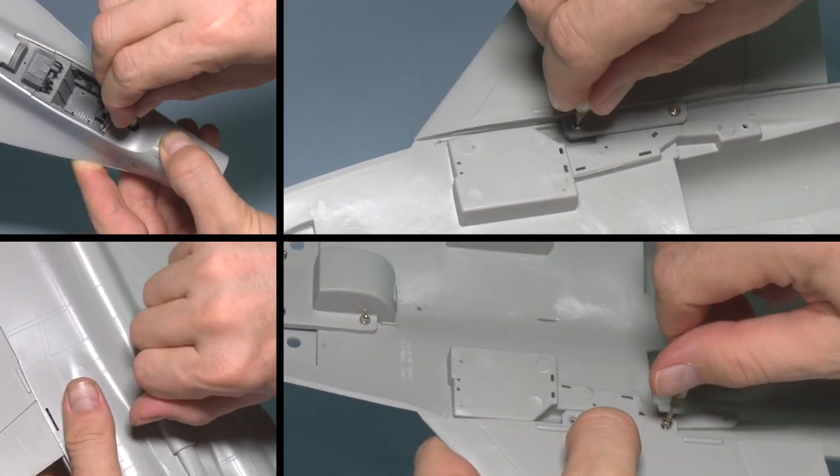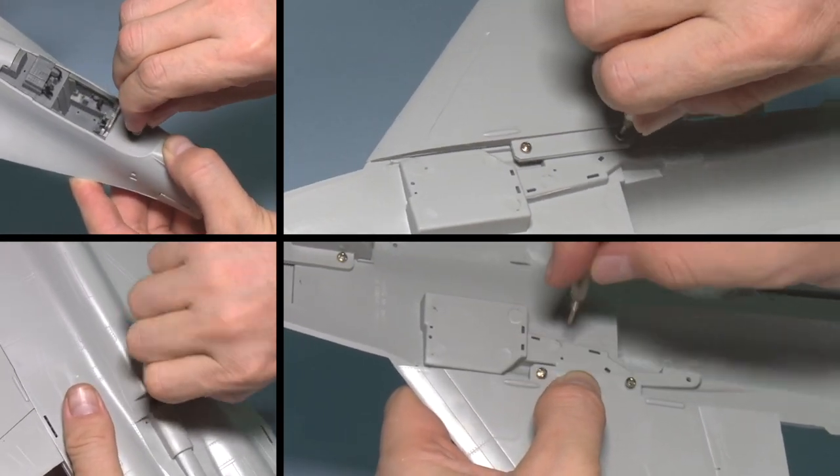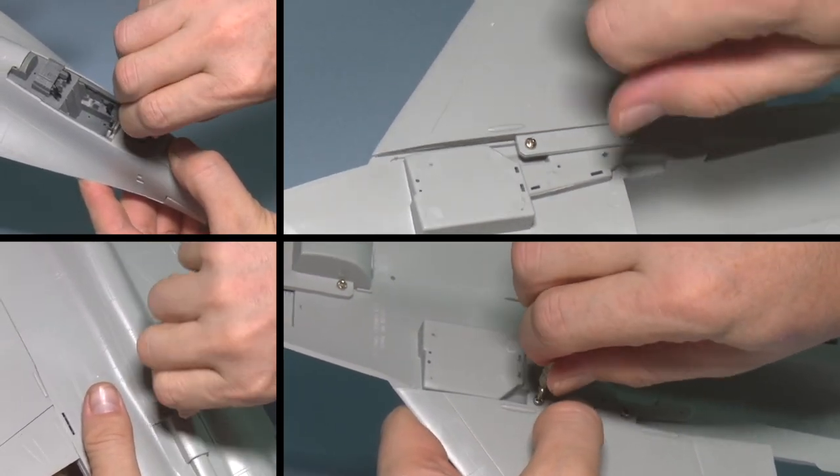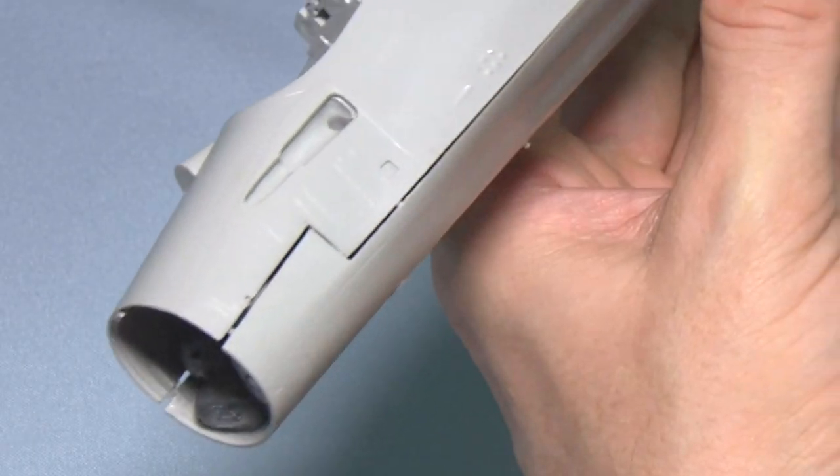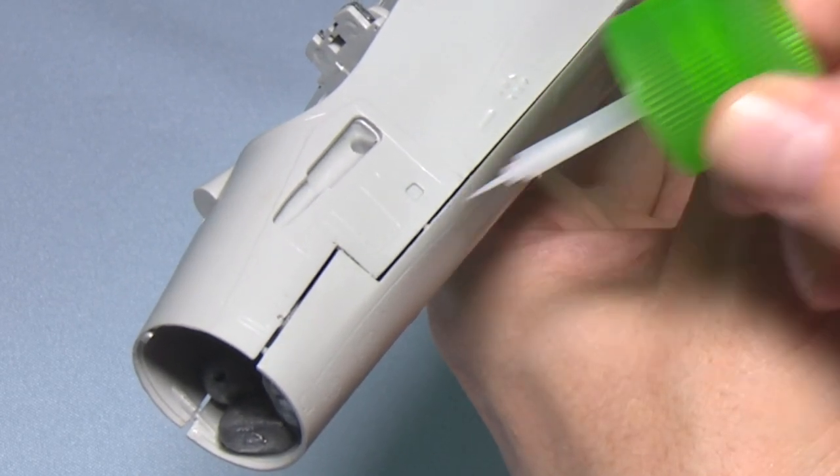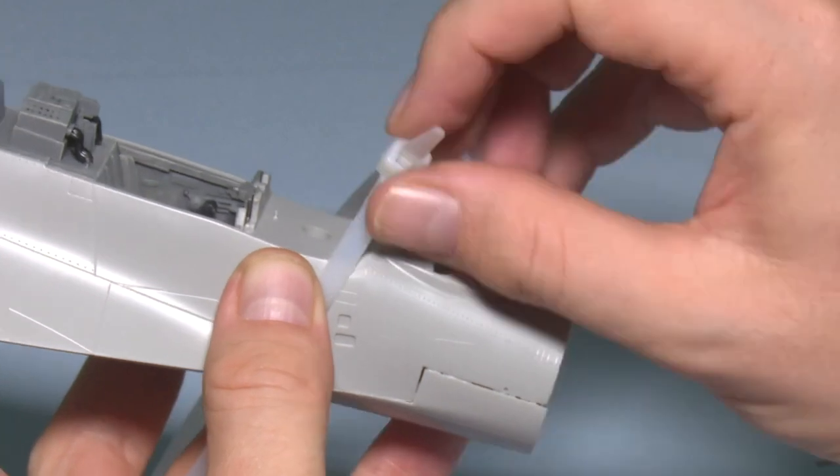Some kits are engineered to include screws and other elements that will help keep the parts together. However, this usually only works for the central part, and the edges, such as the front fuselage here, will still need to be glued properly and clamped down.